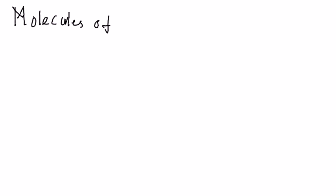Okay, video lesson 4. We'll talk about covalent bonding for molecules of compound. The word compound means it's a combination of two or more than two atoms from different types of atoms — meaning the combination is not from the same type of atom.